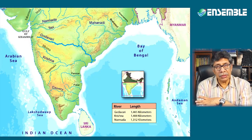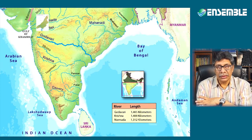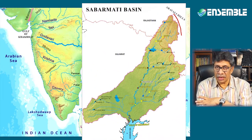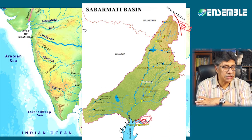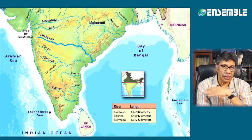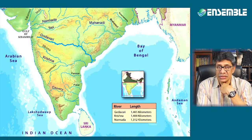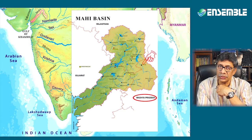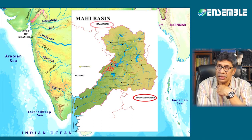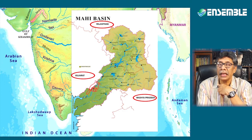The Sabarmati drains the north-western part of the peninsular plateau. It rises in the Aravalli hills and flows south and south-westwards to join the Gulf of Kambhat in the Arabian Sea. The Mahi rises in the western Vindhya escarpment in Madhya Pradesh and, after flowing through the Vagad region of Rajasthan, enters Gujarat and flows into the Arabian Sea in the Gulf of Kambhat.